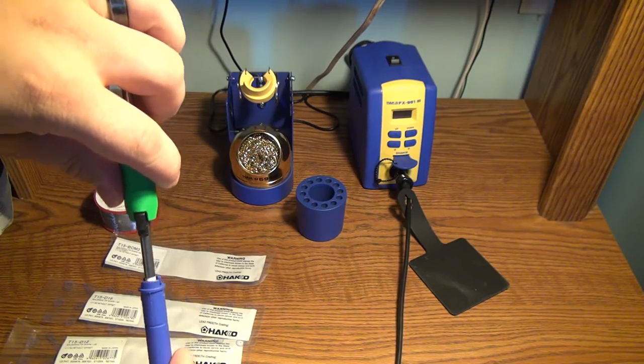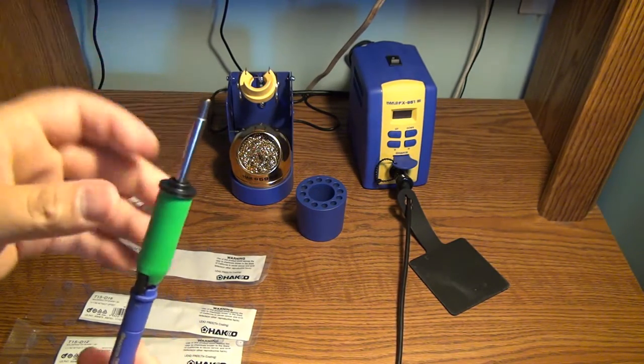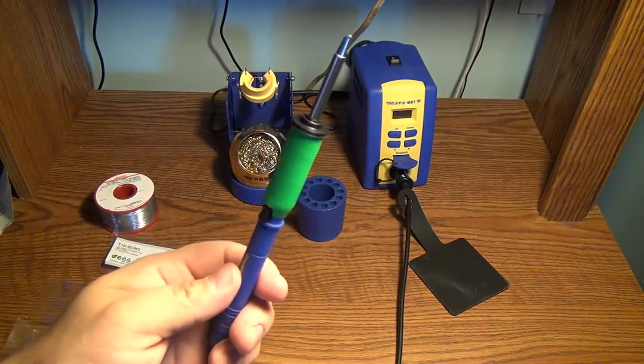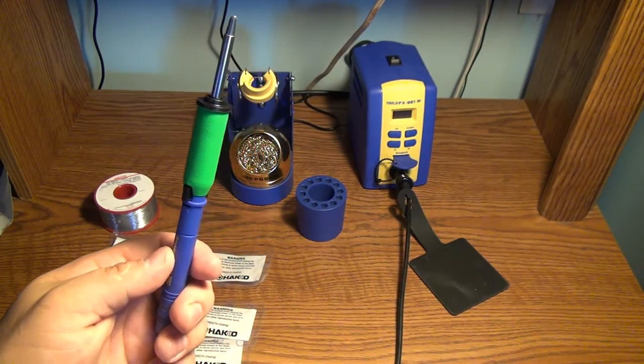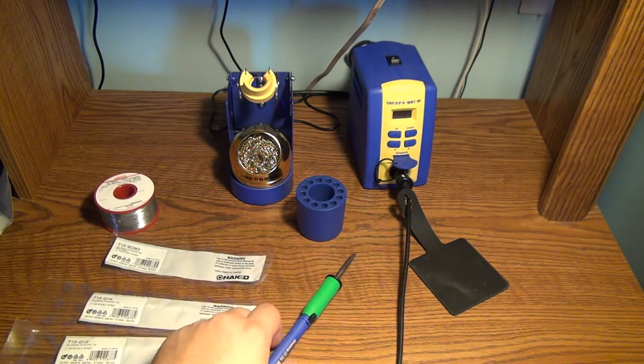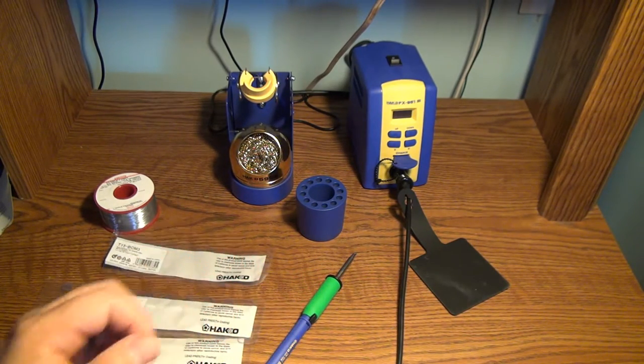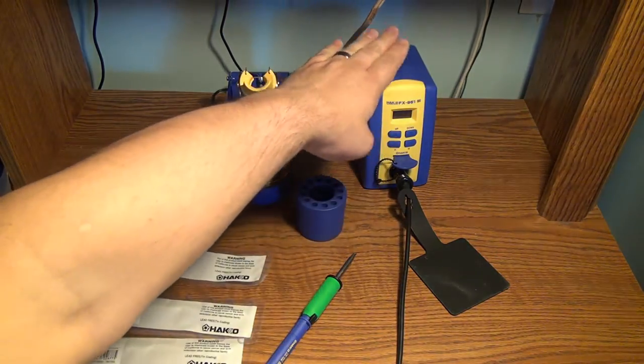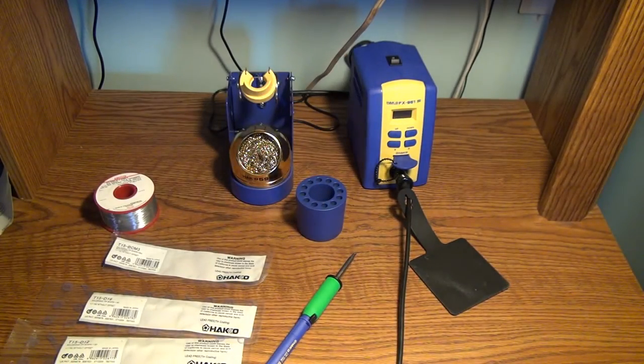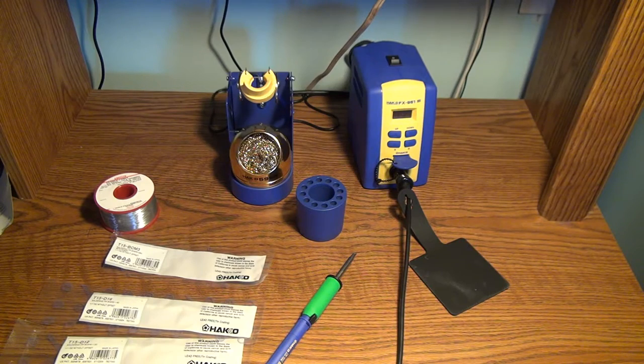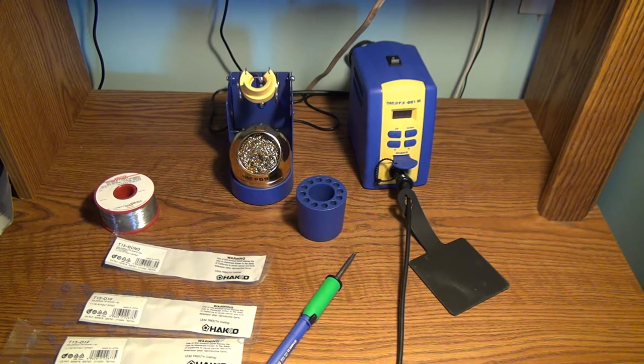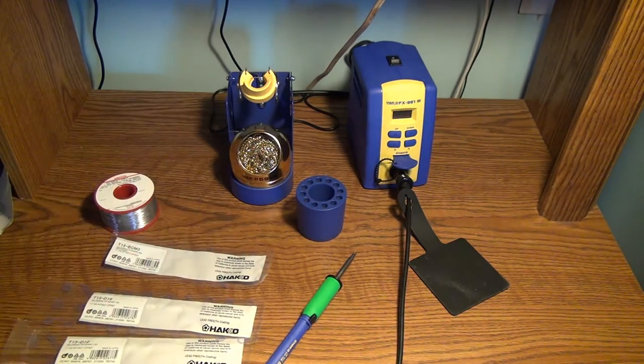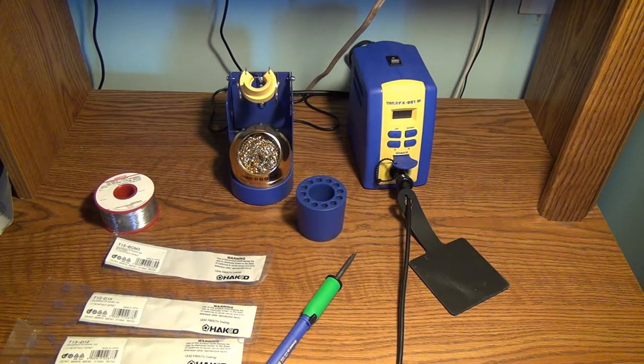So compared to the JBC there's an extra step that you have to pull this off with the tip first, and then insert this into the wand like that. But that's a step I'm willing to live with because whereas the JBC MSRP is $525, this FX-951 MSRP is $267, and actually I found the station on Amazon brand new for $237.